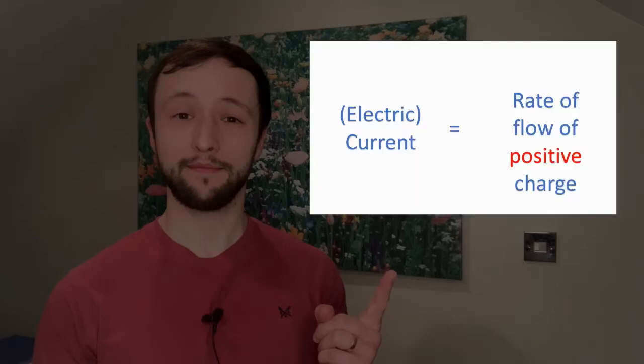Ah yes. You see, in physics the convention is to measure the rate of flow of positive charge. This is why we call it the conventional current. In fact when people talk about current they do mean rate of flow of positive charge because that's just the convention.